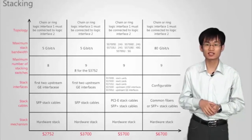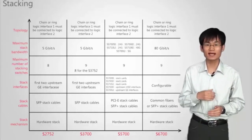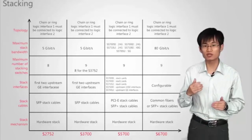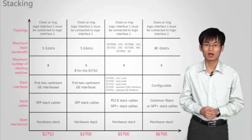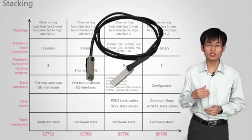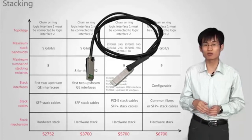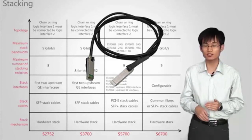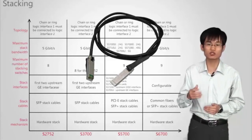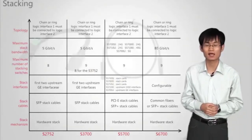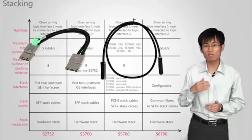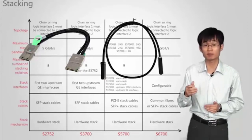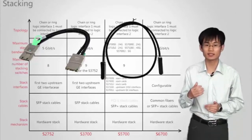Different series switches differ on the stacking mechanism, stacking cables, stack interfaces, the maximum number of member switches, bidirectional stack bandwidth, and topology. For example, the S2752 and S3700 multiplex the stacking SFP cables that are dedicatedly connected to upstream GE interfaces. The S5700 uses stacking cards or multiplexes stacking SFP+ cables or PCIe cables.